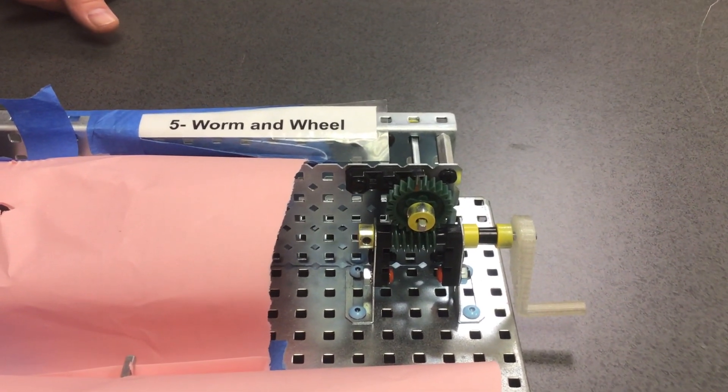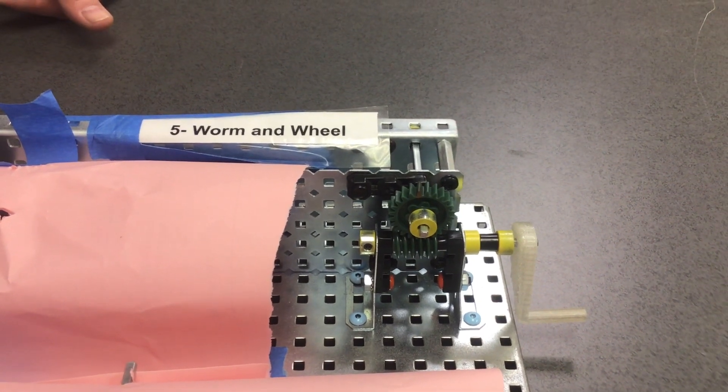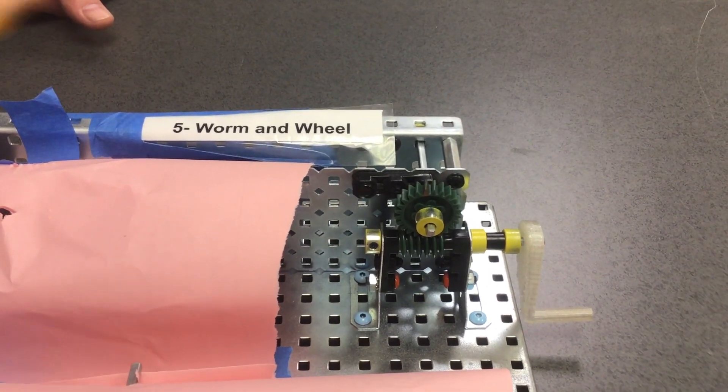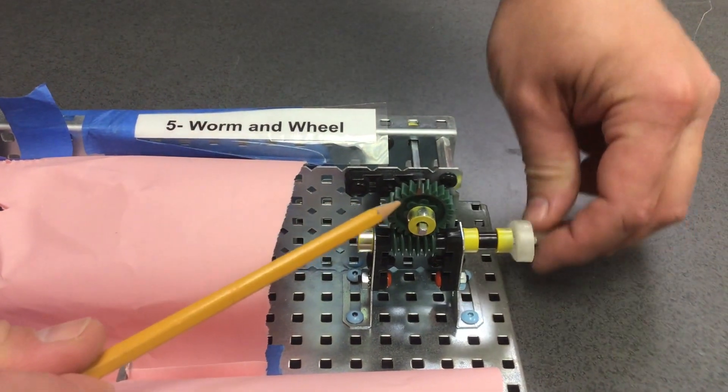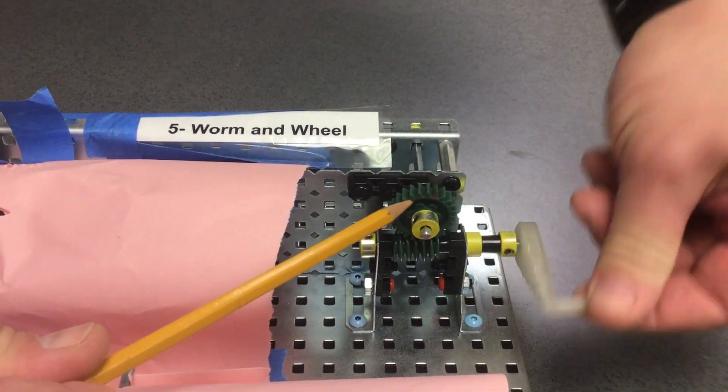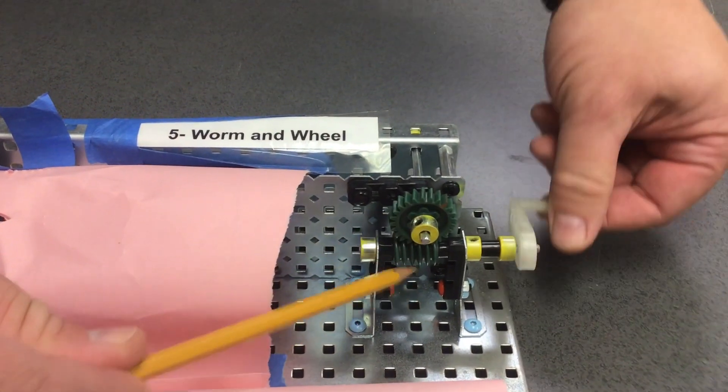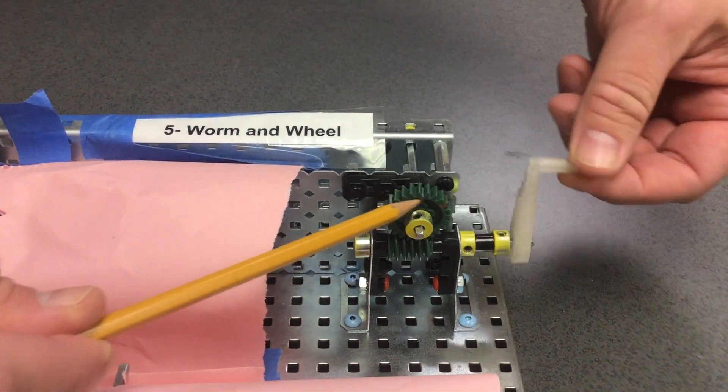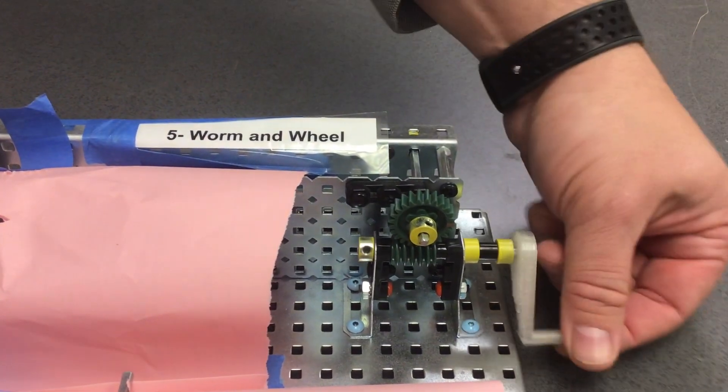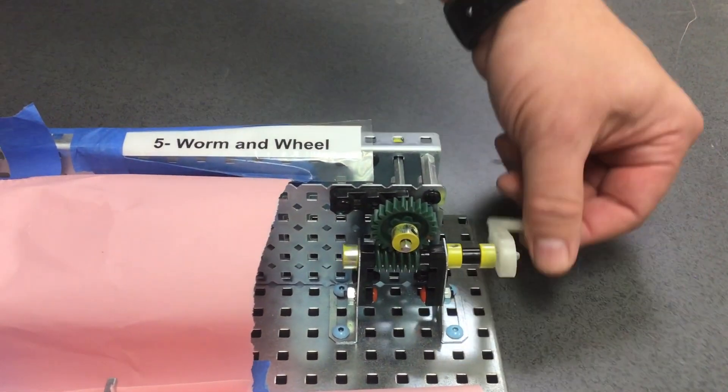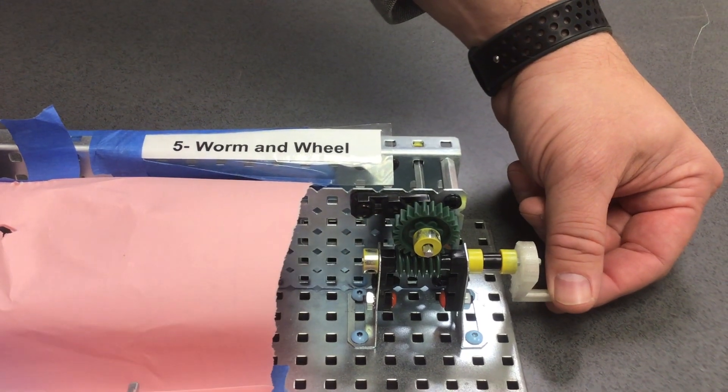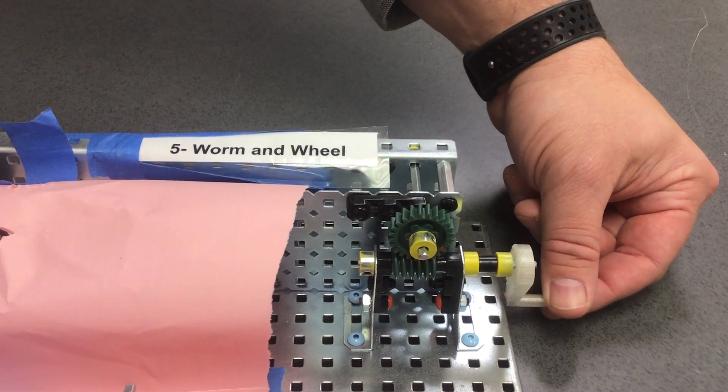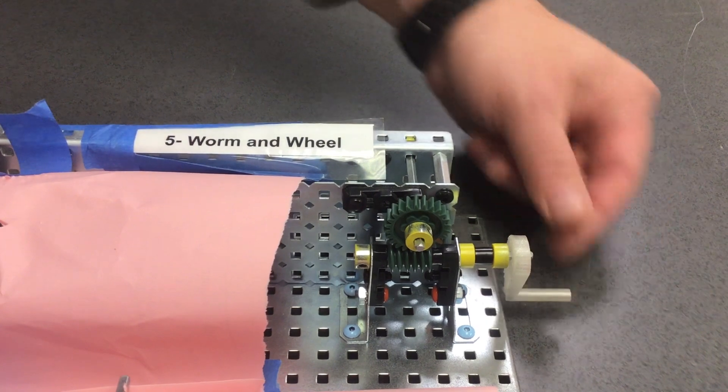What does this do to our speed and our torque? This greatly decreases our speed because this is moving really slow and this is moving fast but this is moving really slow on the output. So it decreases our speed but it increases. It makes this very very strong. So we have increased torque or power.